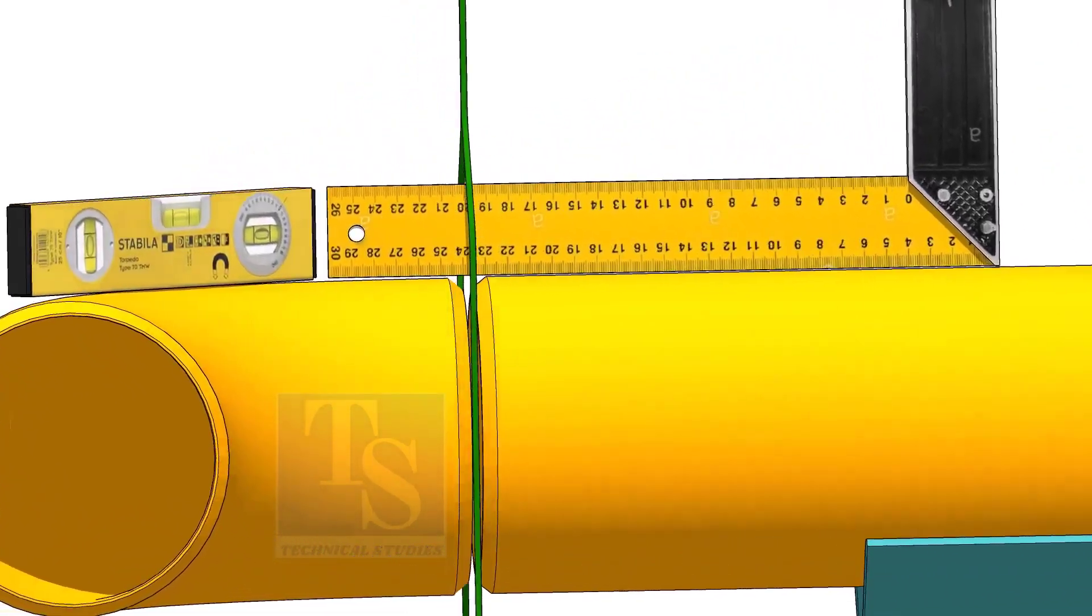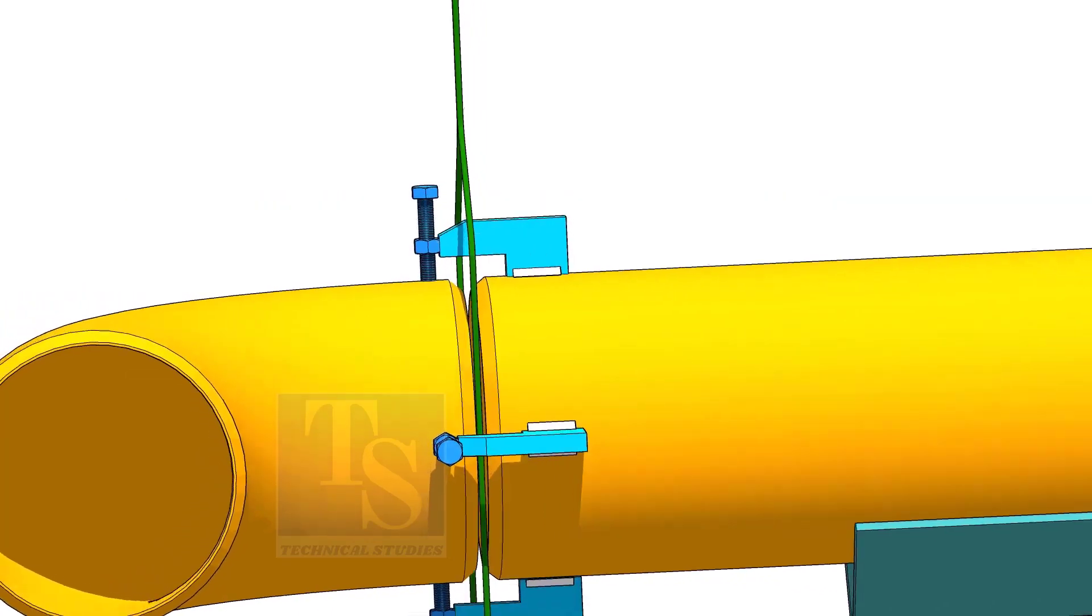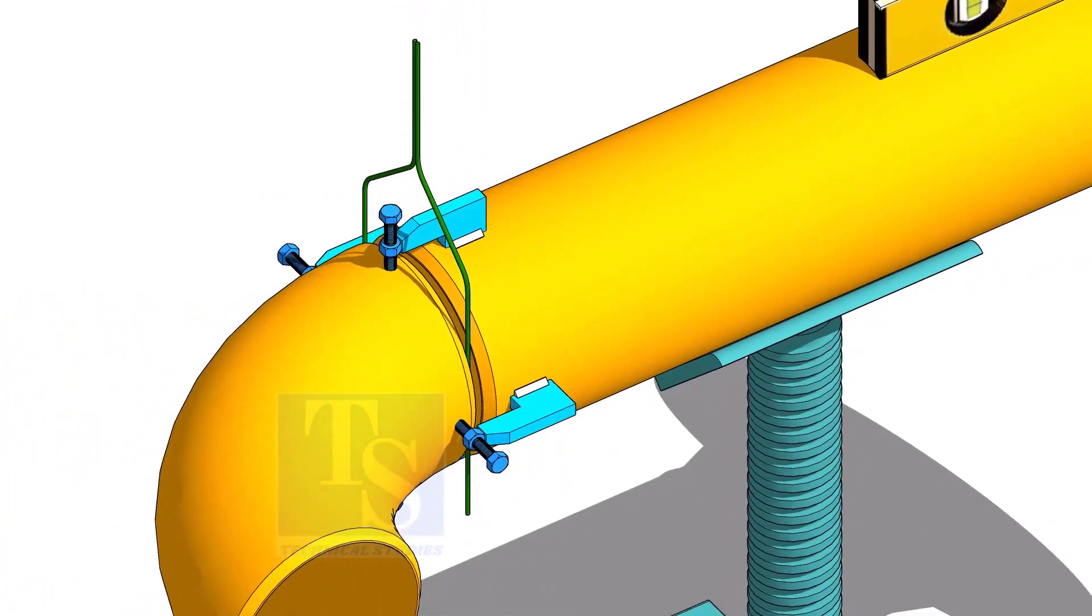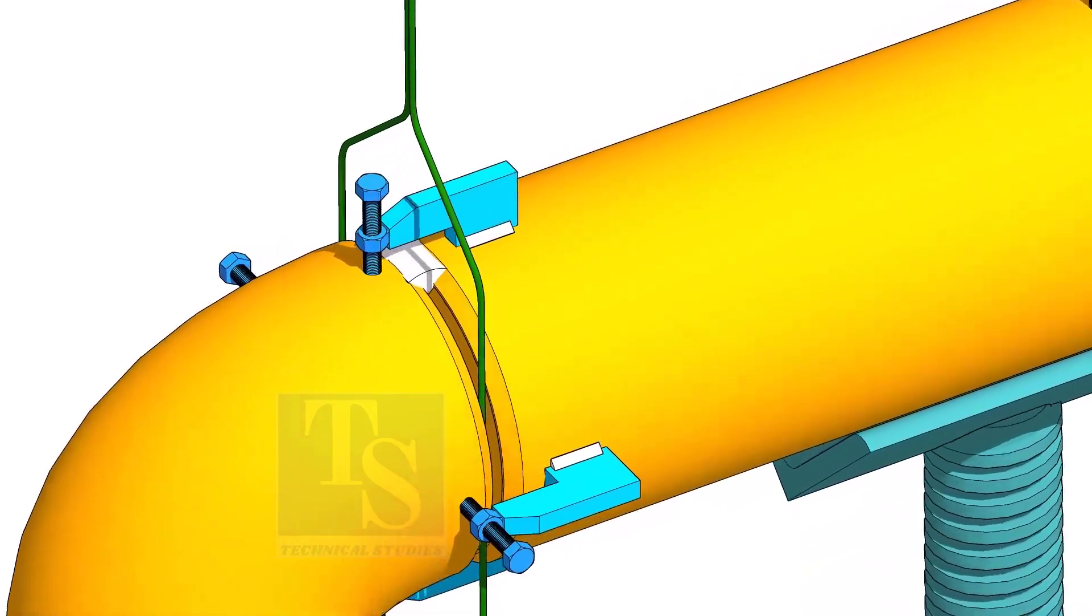Correct the overlap. Tack weld on the top of the joint.